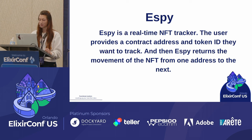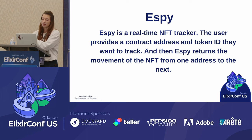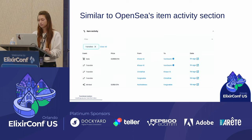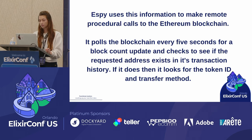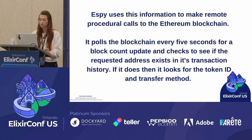We built a small project called Espy. Espy is a real-time NFT tracker — the user provides a contract address and token ID they want to track, and then Espy returns the movement of the NFT from one address to the next. It's super similar to OpenSea's activity section. Espy uses the information the user provides to make remote procedural calls to the Ethereum blockchain, pulling the blockchain every five seconds for a block count update and checking to see if the requested address exists in its transaction history.